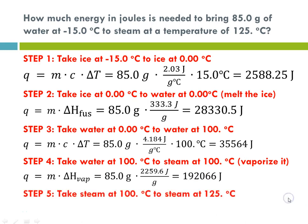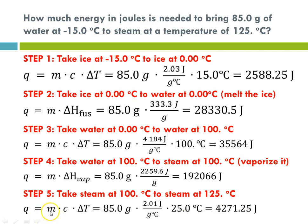Step 5: we take steam at 100 to steam at 125. We have a delta T of 25 degrees C. Our equation is Q equals MC delta T, using the mass, the specific heat for steam, and delta T, and that number comes out to 4,271.25 joules.